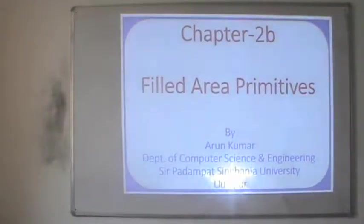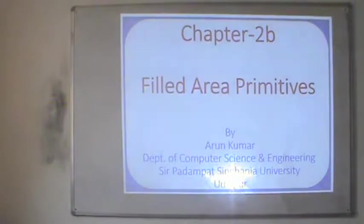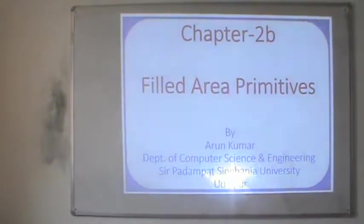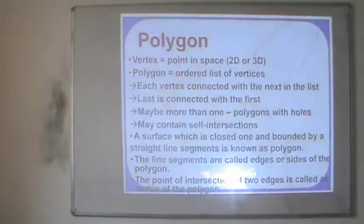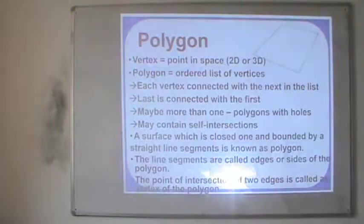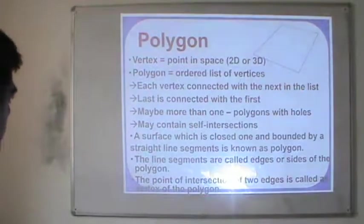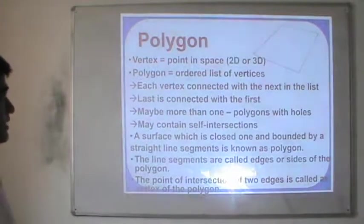Most of the things that we have done in computer graphics till now deal with how we can color the objects and what is the methodology adopted in it. So let us discuss few basic points. First of all, polygon. Let us describe the polygon.